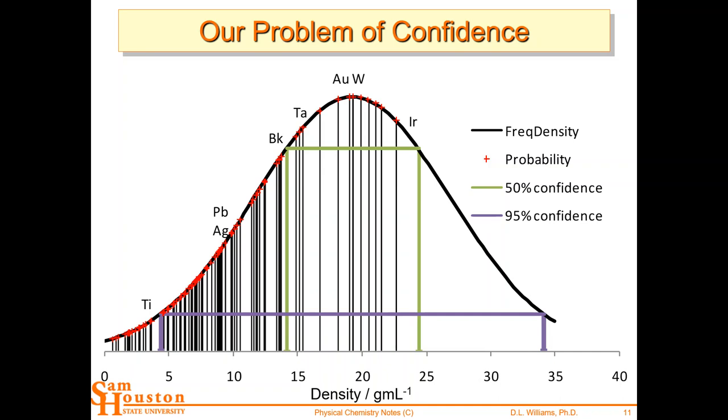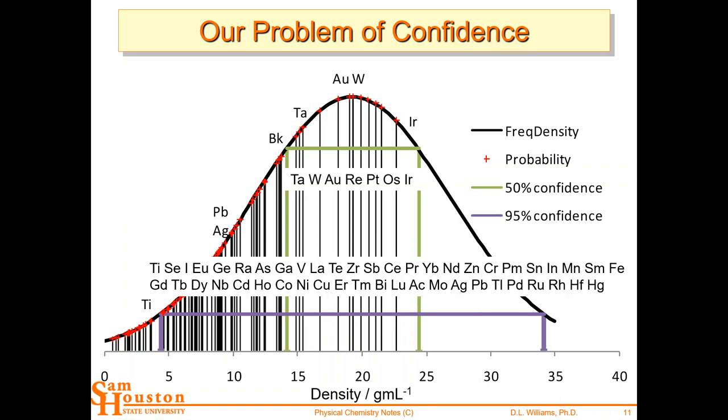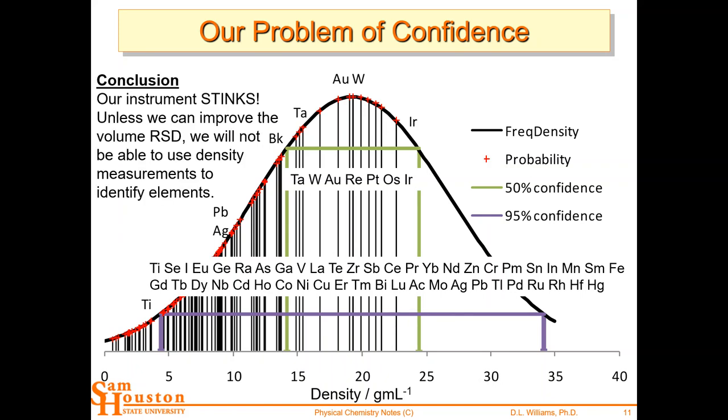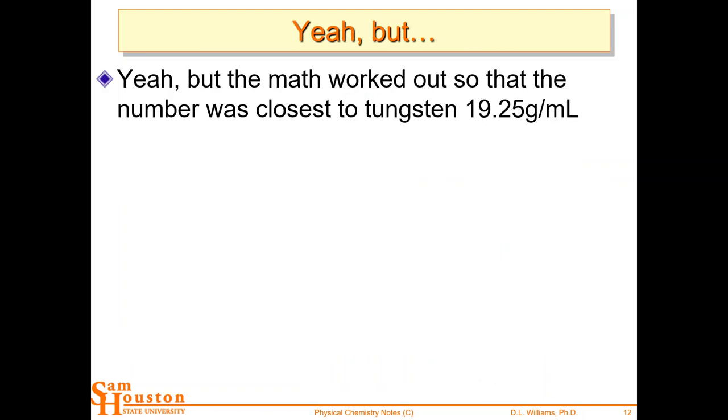But I've also put on here the 50% confidence limits. So I could say it's a 50-50 shot that it's tantalum, tungsten, gold, rhenium, platinum, osmium, or rhenium. Okay, flip a coin. It's either those or it's not. Okay, or if I wanted to be 95% confident, I could say it's, I'm 95% confident it's in this list. That sounds kind of cheap. No, it's statistics. We got a really crappy volume measurement. Okay? And so our conclusion is our instrument stinks. Right? You cannot say that it's tungsten. You can't say, yeah, but. Okay, there are no yeah buts.